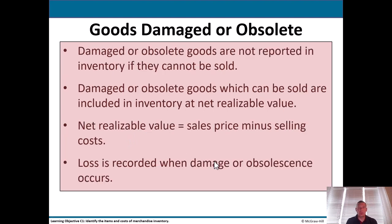What about damaged or obsolete goods? They're not going to be reported in inventory if they can't be sold. Damaged or obsolete goods which can be sold are included in inventory at net realizable value, which is simply the sales price minus the selling cost. Any loss would be recorded when damage or obsolescence occurs.